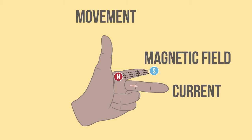Your second finger represents the direction of the electricity or conventional current flow. Your thumb represents the direction of movement.